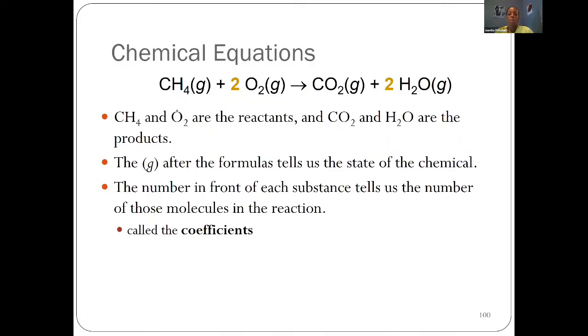Looking at the chemical equation from the previous example, there's a lot of information we can garnish from it. This side is our reactants - the starting material. This side is our products. The letters in parentheses tell us the state of matter: solid, liquid, or gas. We're going to learn how to predict that in future chapters.